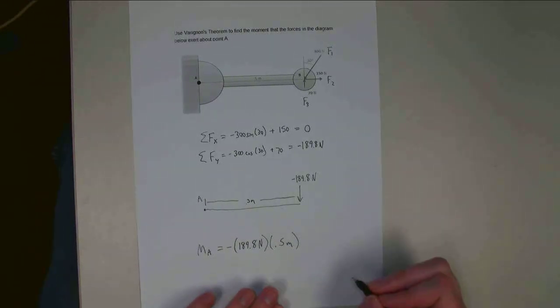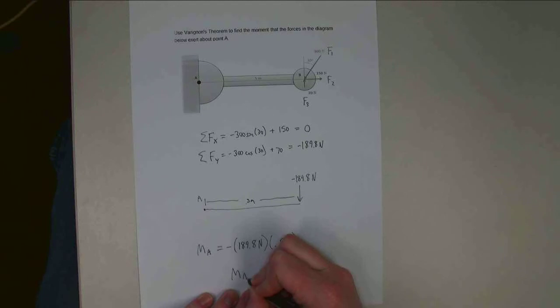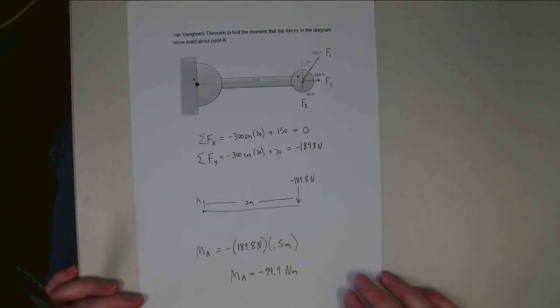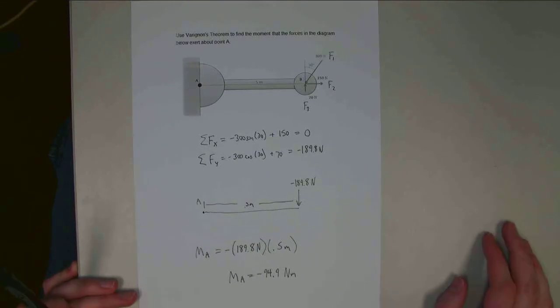So multiply the two numbers together, I get a negative 94.9, and my units are going to be newton meters. So with that, we've solved our problem. Thank you for watching, and I hope to see you again.